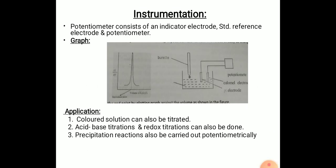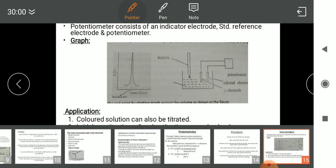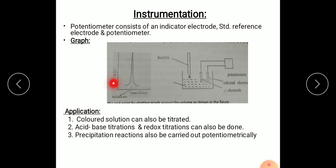Next we will study the instrumentation. Instrumentation is very simple. One potentiometer is taken consisting of indicator electrode that is platinum electrode and one reference electrode that is calomel electrode and potentiometer. For the graph, we plot delta E, change in EMF, divided by delta V, change in volume, on the y-axis. Each time we are adding 0.5 ml. This ratio is plotted on y-axis and volume of K2Cr2O7 added each time, 0.5 ml, is on the x-axis.